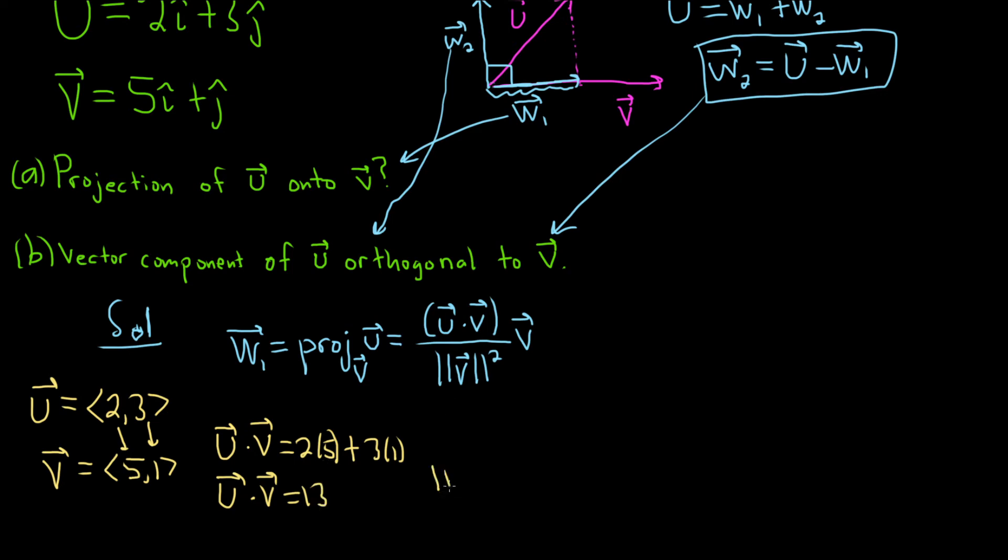And then for the magnitude of v, all you do there is you take the square root and you square each of the components of v. So 5 squared plus 1 squared. So that'll be 25 plus 1. So 26.